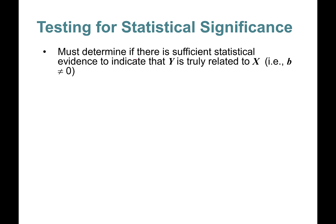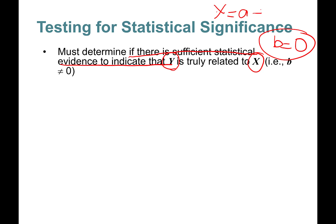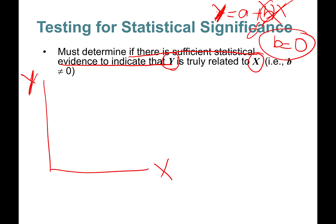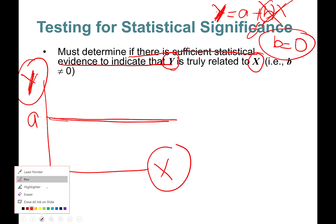We must determine if there's sufficient statistical evidence to indicate that y is truly related to x — in other words, if beta is not equal to zero. If beta is equal to zero, then there is no relationship between y and x: y doesn't vary or change at all depending on x. We don't want that.